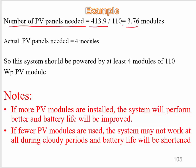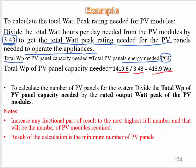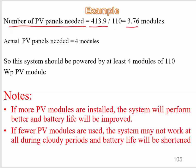The result is 3.76. According to note two, the result of the calculation is the minimum number of PV panels, so 3.76 means we need four modules. This system should be powered by at least four modules of 110-watt peak PV panels.